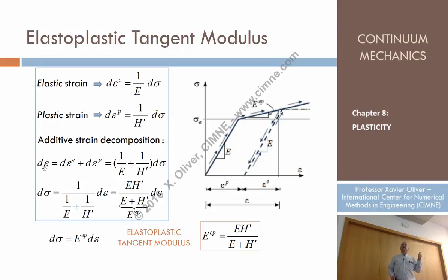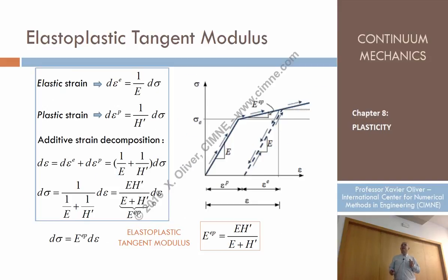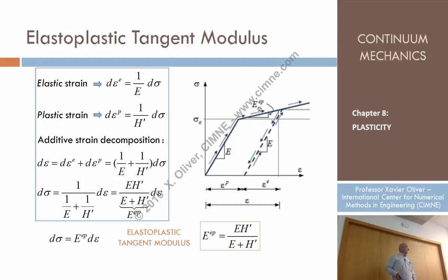That gives us a relationship of the incremental strains and incremental stresses. By inverting this relation, we obtain a relationship that provides the value of the incremental stress in terms of the incremental strain — which is what we are looking for. That value turns out to be the elastoplastic modulus, which turns out to be the Young modulus times H prime divided by the Young modulus plus H prime. So now we have the constitutive equation fully defined in terms of the Young modulus, the elastic limit, and the hardening modulus, and nothing else.